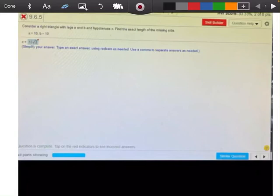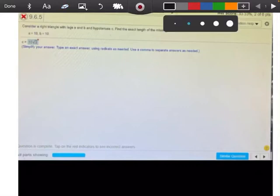Alright, so guys, what we're going to do here is solve this problem. It says, consider a right triangle with legs A and B and hypotenuse C. Find the exact length of the missing side.